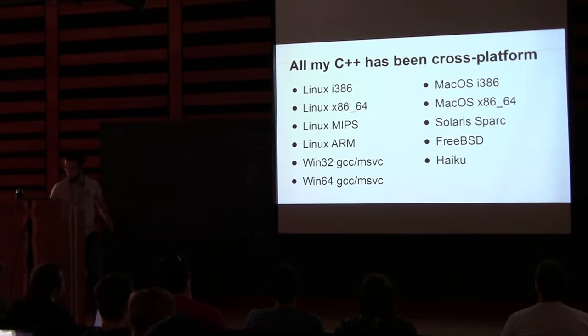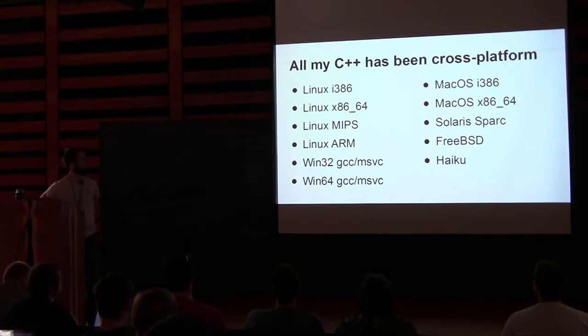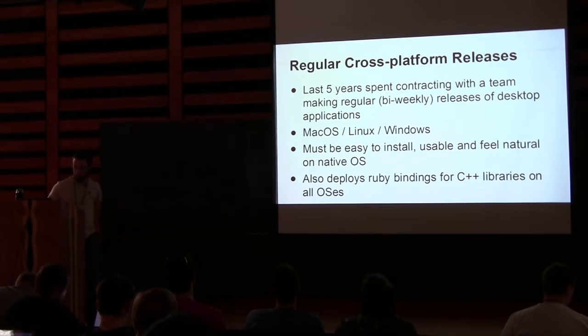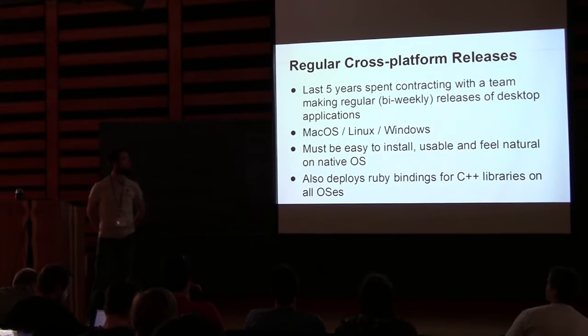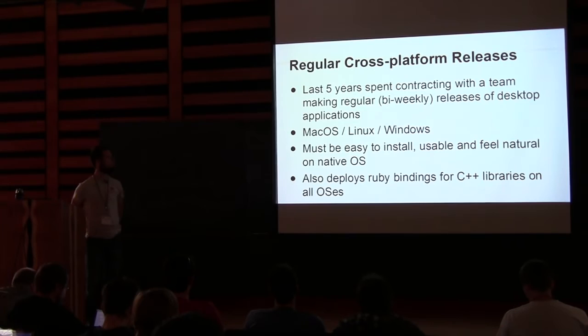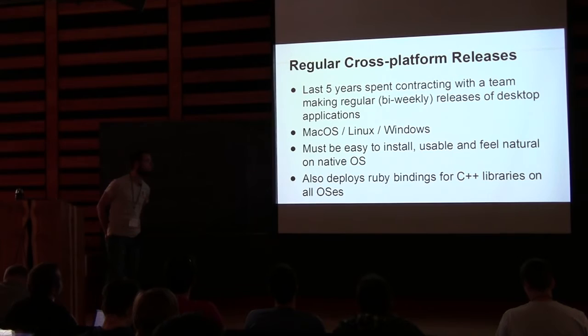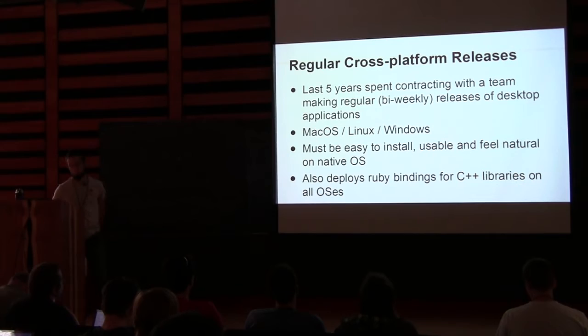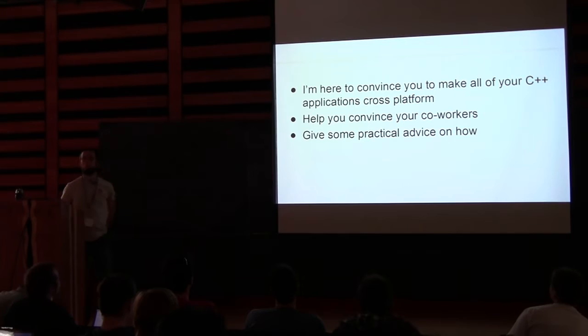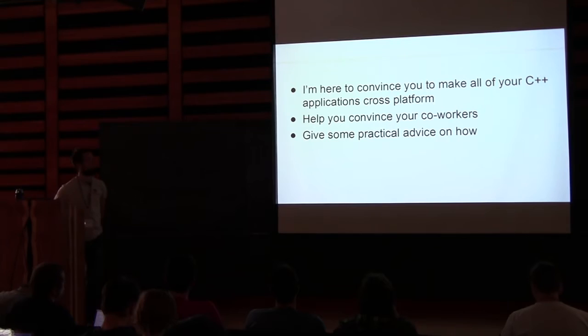These are some of the platforms I've worked on. All of them except for FreeBSD and Haiku have been work I was paid to do. Over the past five years, I've been working with a team that makes bi-weekly releases of tools that have to run on Mac OS, Linux, and Windows, and they have to be easy to install and feel like natural applications on the respective platforms. We also build a set of Ruby bindings with SWIG and deploy them on all three OSes. Today, in the next 35 minutes, I'm going to convince you that all of your C++ applications should be cross-platform.